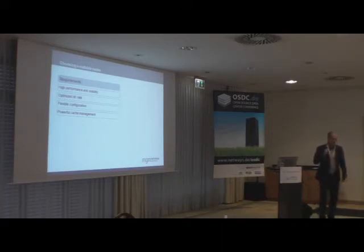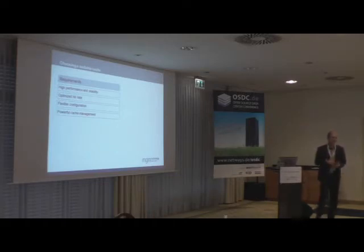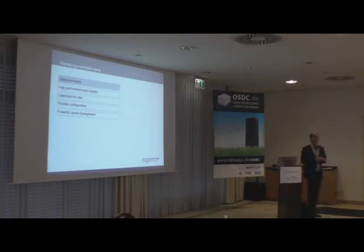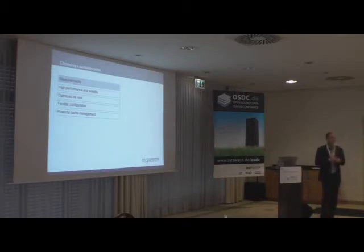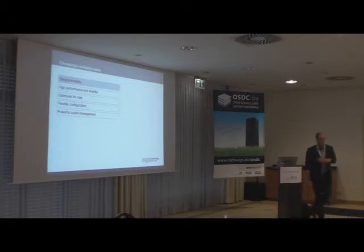The main part we can really influence is the hit rate. We have to optimize the whole scenario for a high hit rate. If we have a hit rate of 90%, we are 10 times more effective than without a cache. But if we have a hit rate of 99%, we are 100 times more effective. The goal is really to optimize the hit rate. Strangely enough, the choice of caching software really influences the hit rate, for some really interesting reasons you'll see on later slides.